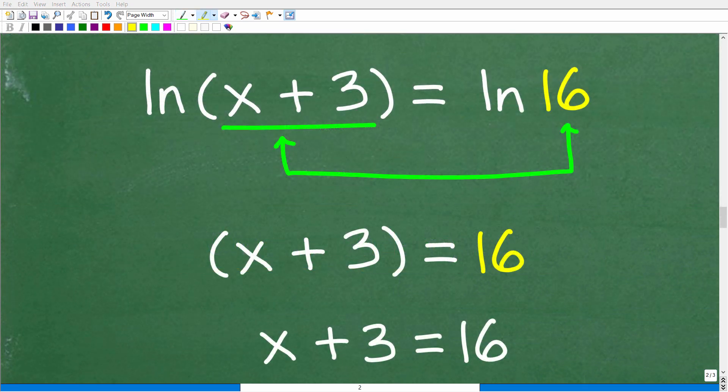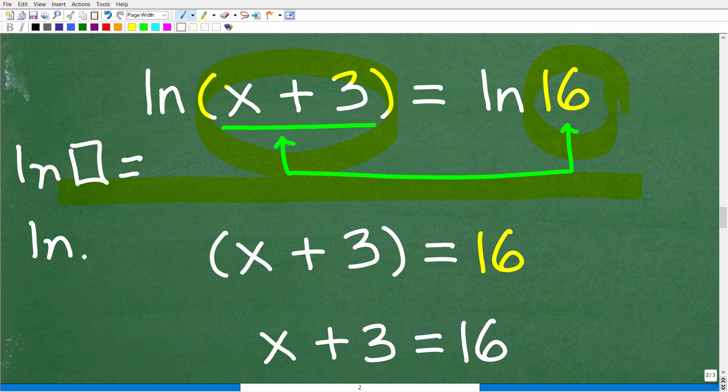All right, so now that we have this equation down to ln(x + 3) = ln16, it's going to be very easy to solve this equation. Because here we have ln of something is equal to ln of something else. So if you just kind of think of it, if we have ln—matter of fact, let me write this over here. So we have ln of something, and that's equal to ln of something else. Well, the only way these things can be equal is that this thing and this thing must be equal themselves.